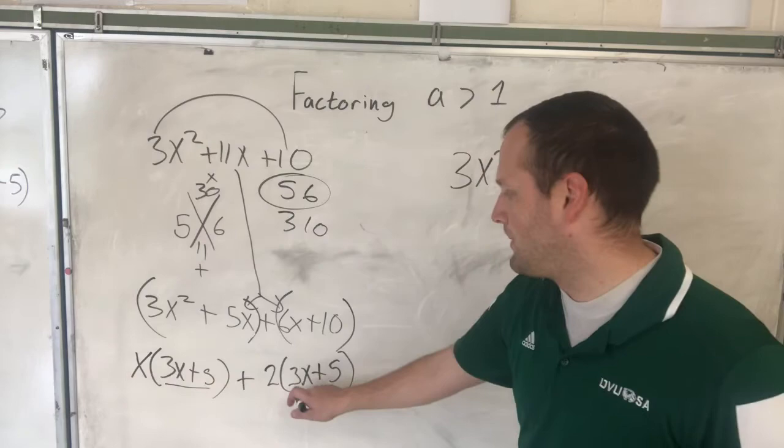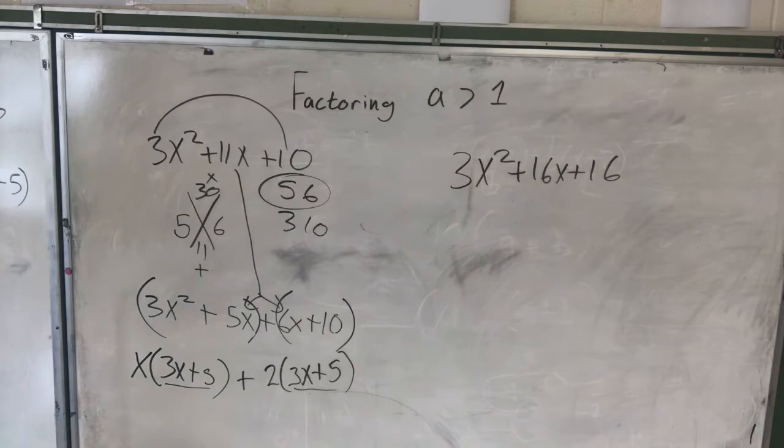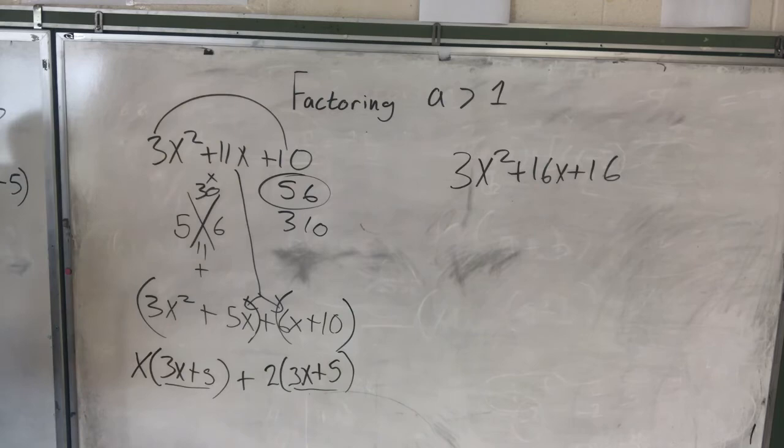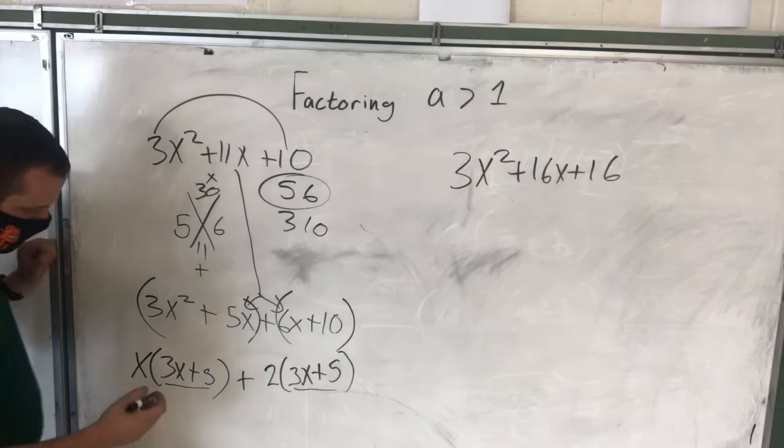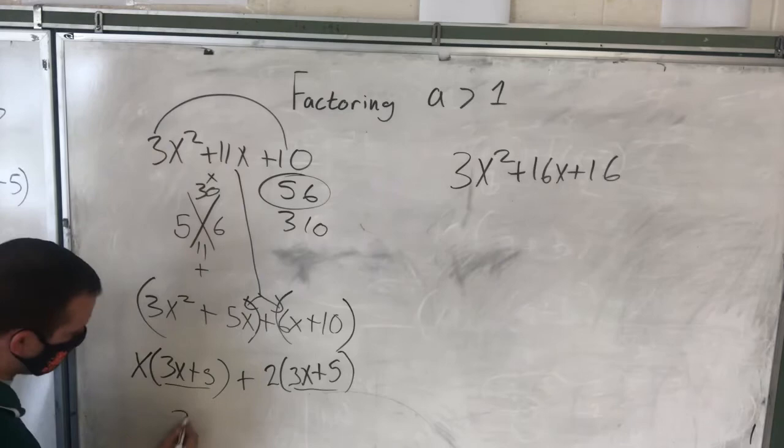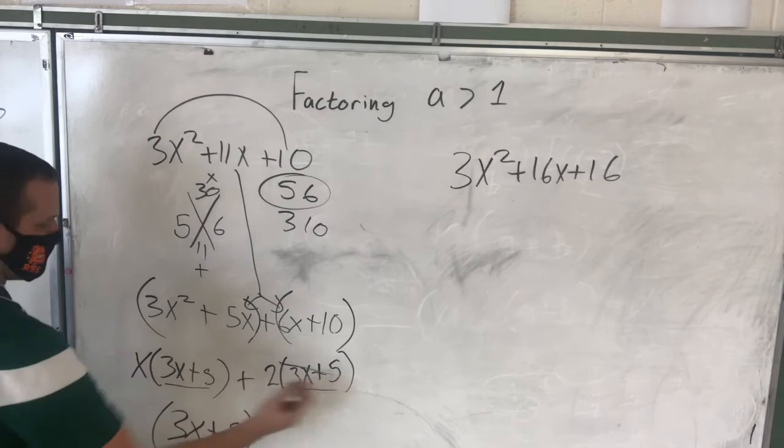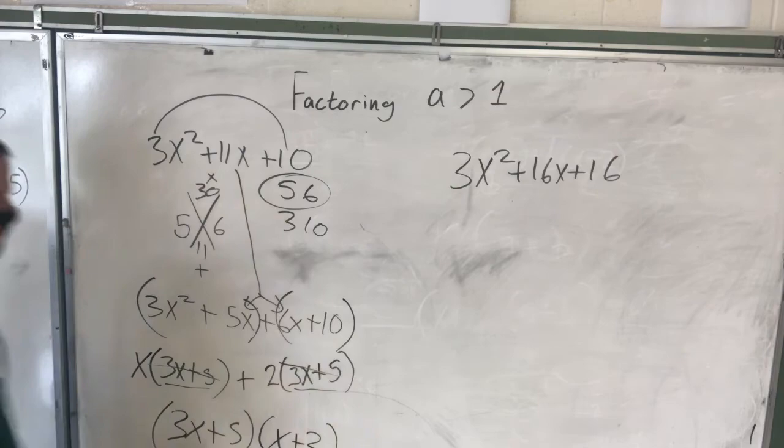Now, here's the way to check if you did it right. If you get the same binomial, if they're the same binomial, that means that you did this correctly up till now. If they are different, it means that on one of these, you could have simplified or factored out a little bit more. So, now, all I'm going to do is I'm just going to factor out my 3X plus 5s. And what's left if I factor out the 3X plus 5s? X plus 2. Ta-da!